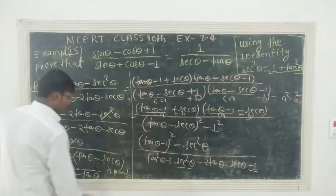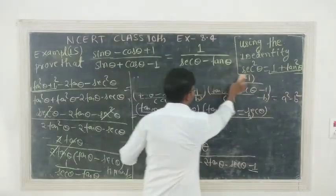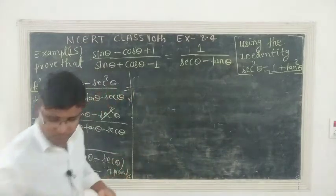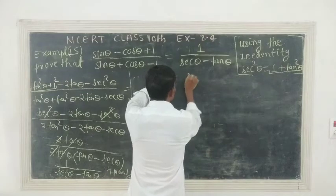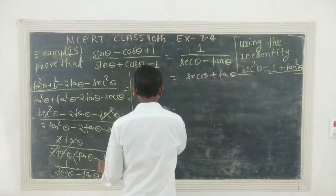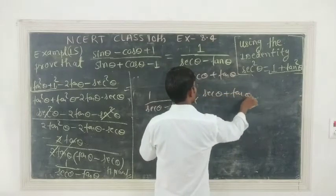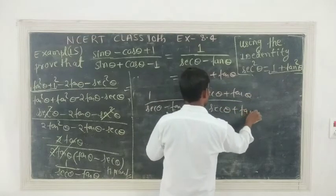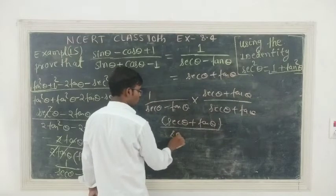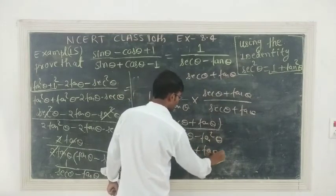Now listen to this important point. After reaching 1 by sec theta minus tan theta, you can prove that sec theta plus tan theta equals 1 by sec theta minus tan theta. This is because multiplying and dividing by sec theta plus tan theta gives a plus b times a minus b, which is a squared minus b squared — and sec squared theta minus tan squared theta equals 1. So sec theta plus tan theta equals 1 by sec theta minus tan theta.